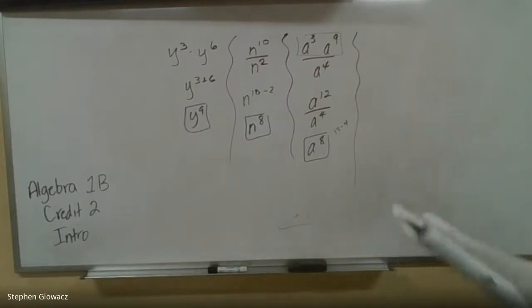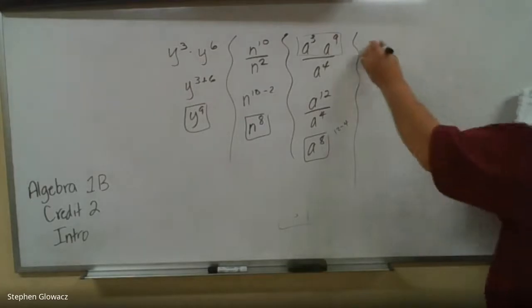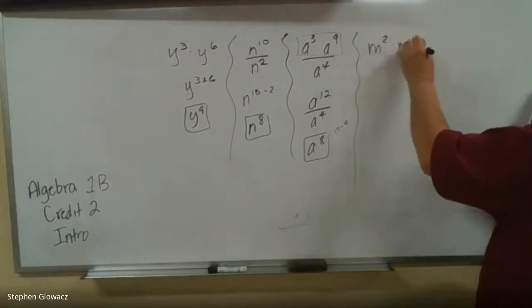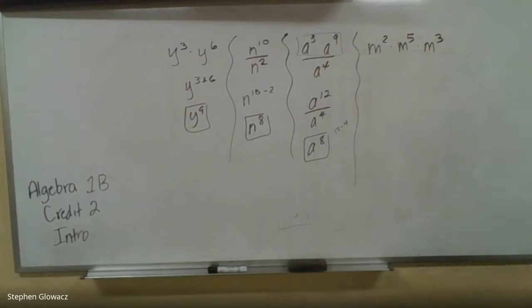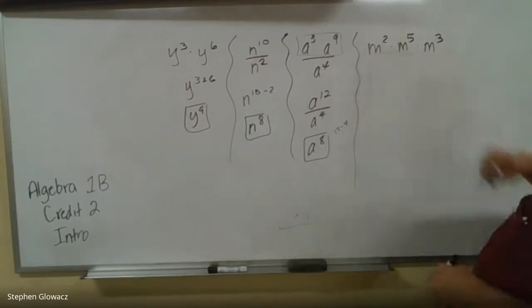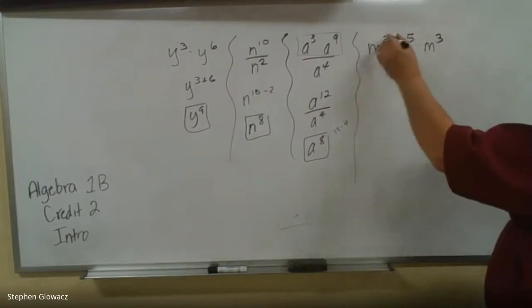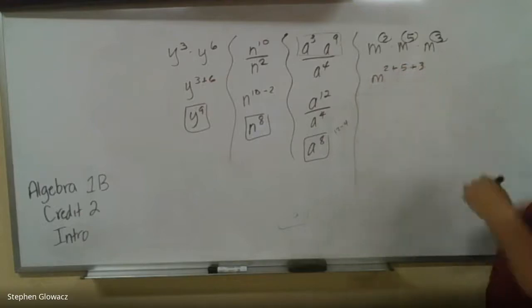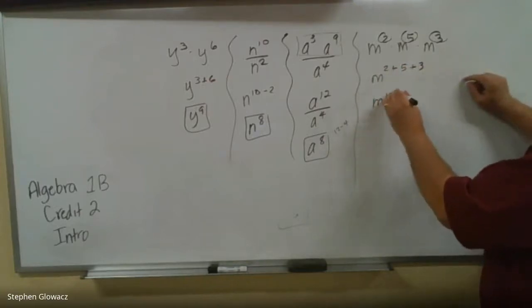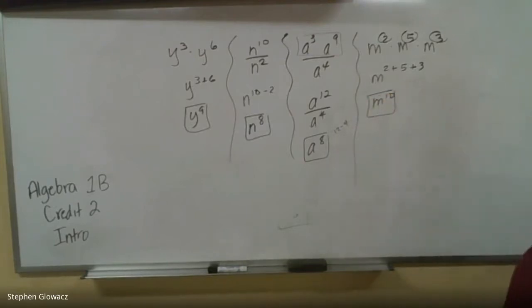Finally, number 10, we have N to the second times N to the fifth times N to the third. So we're multiplying the same rules, even though we got three terms, or three Ns up here. We're multiplying, so we're just going to add up all the exponents. 2 plus 5 plus 3. 2 plus 5 is 7, 7 plus 3 is 10. So that would be N to the 10th power. And that is it.